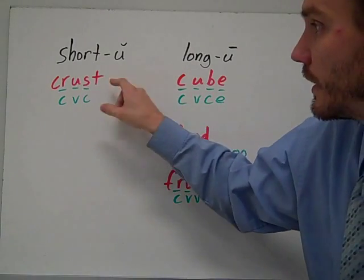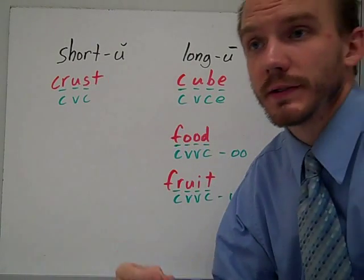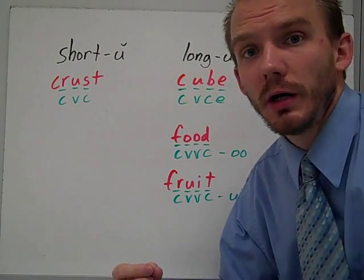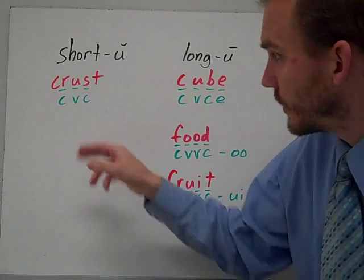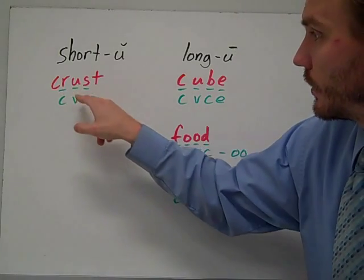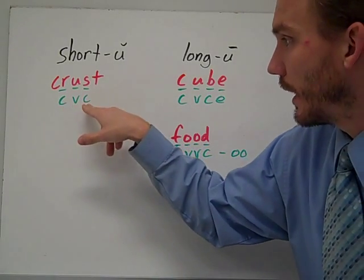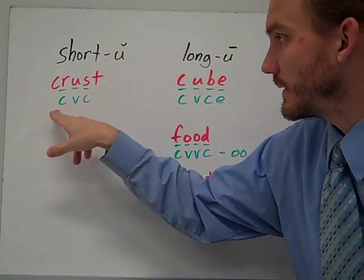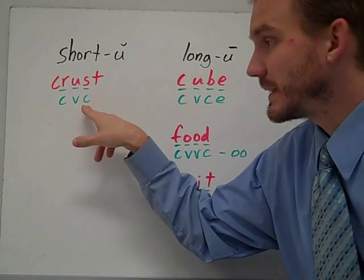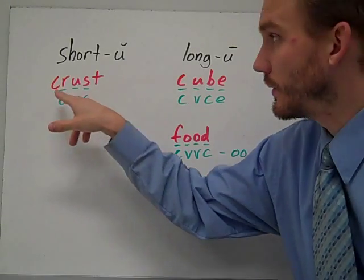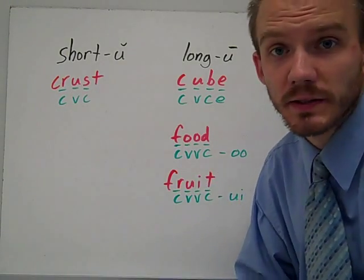Let's start with short U and look at the word crust. If you look in the middle of that word, you have the vowel with consonants on either side. So it's a CVC pattern to spell crust.